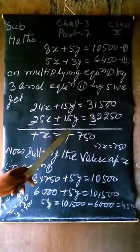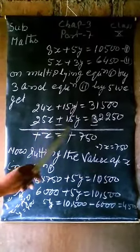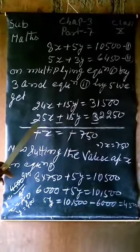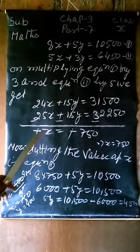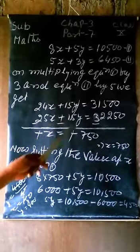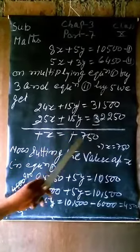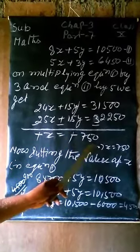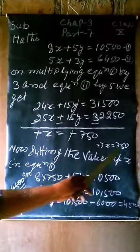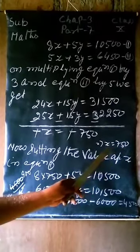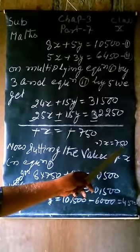Now subtract these two equations. In subtraction, the symbols change as you can see. So 24x minus 25x equals minus x, this will cancel. Equal to if we subtract these, we get minus 750. So x equals 750, that means the cost of one chair is 750.